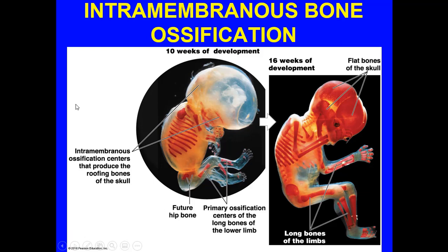At 10 weeks of development, intramembranous ossification centers produce the roofing bones of the skull — notice they're red because of increased blood delivery. Primary ossification centers in the long bones of the lower limb are also visible, as are the future hip bones. By 16 weeks, you can now see the formations of flat bones of the skull and the development of long bones in the limbs.